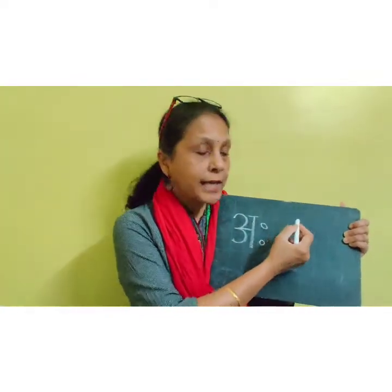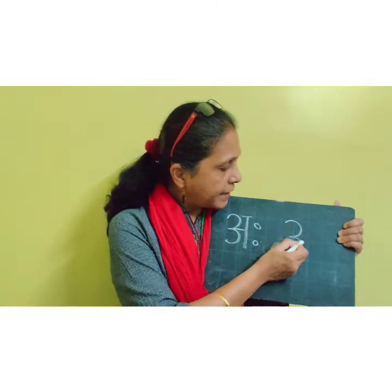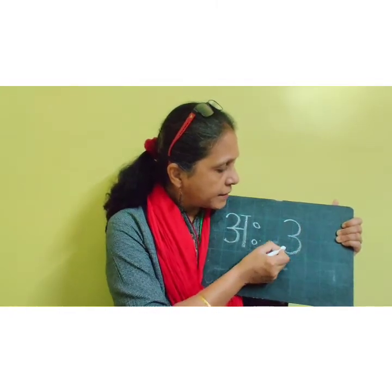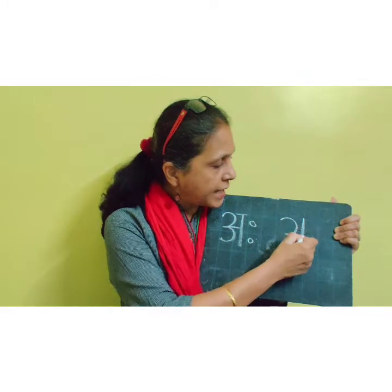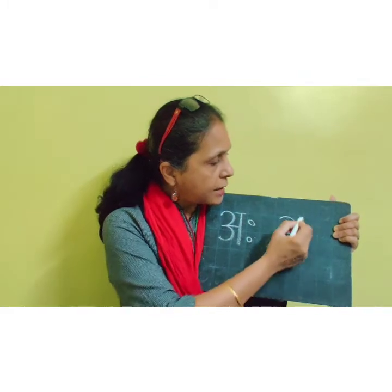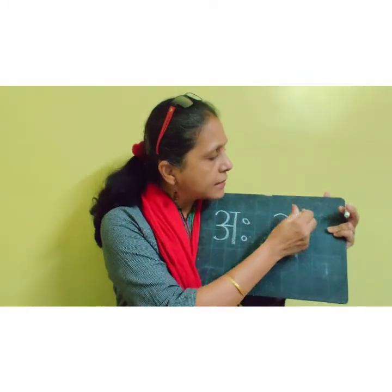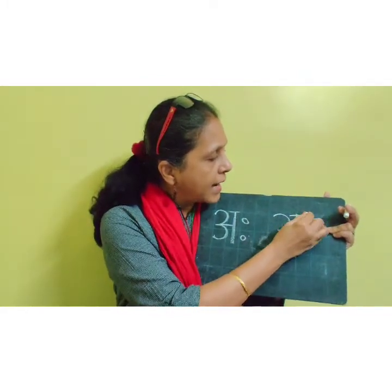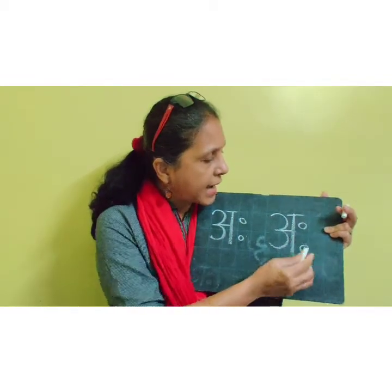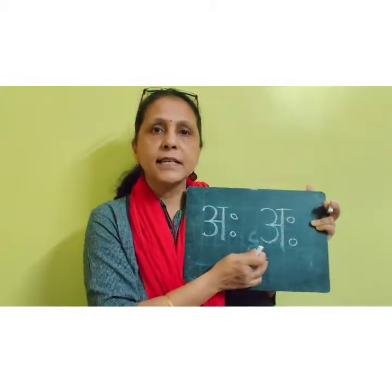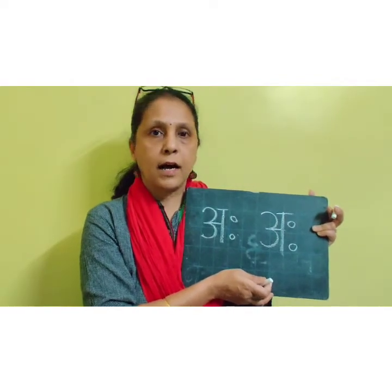How to write Aha? Just write number 3, then a sleeping line, then a standing line, over a small sleeping line and two dots beside the standing line. This is Aha, and we are going to revise Aha.